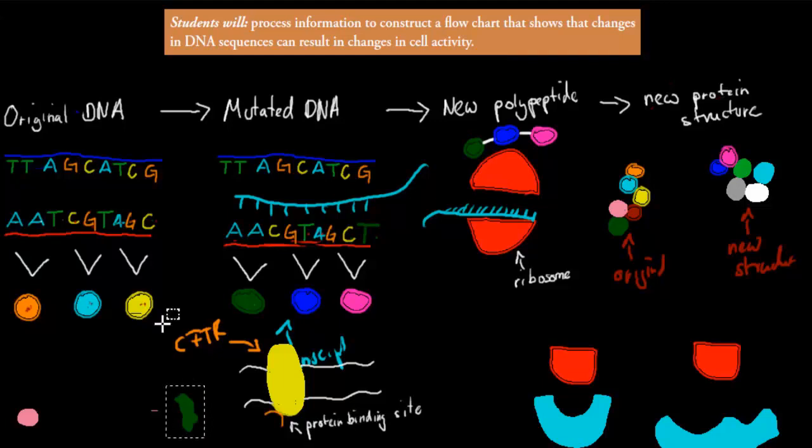Because of the mutation, we actually have this kind of protein getting produced. And this doesn't fit. So it's not going to open the channel. And that's why the mucus would build up. This would be one example of how a change in DNA sequence can lead to change in cell activity.